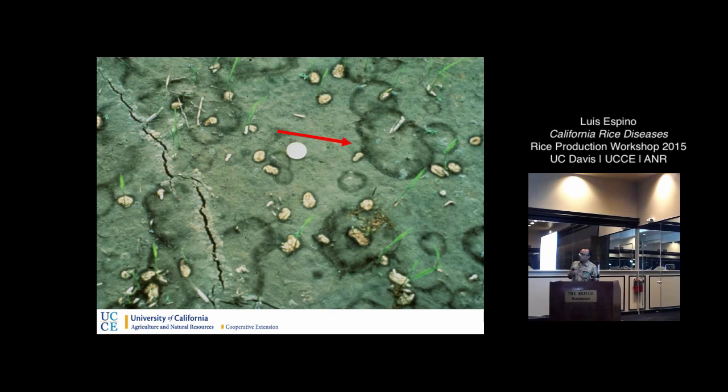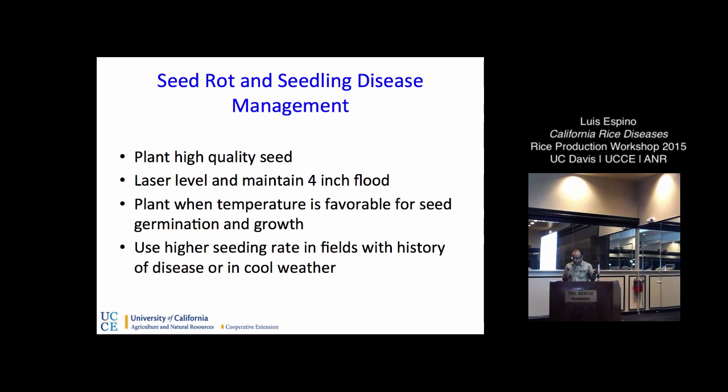There's really not much one can do once you're having an issue with seedling disease — everything is prevention. Using good quality seed and ensuring quick establishment through laser leveling and a good four-inch water flood will help achieve a uniform stand that grows quickly, which reduces the likelihood of a seedling disease infection.